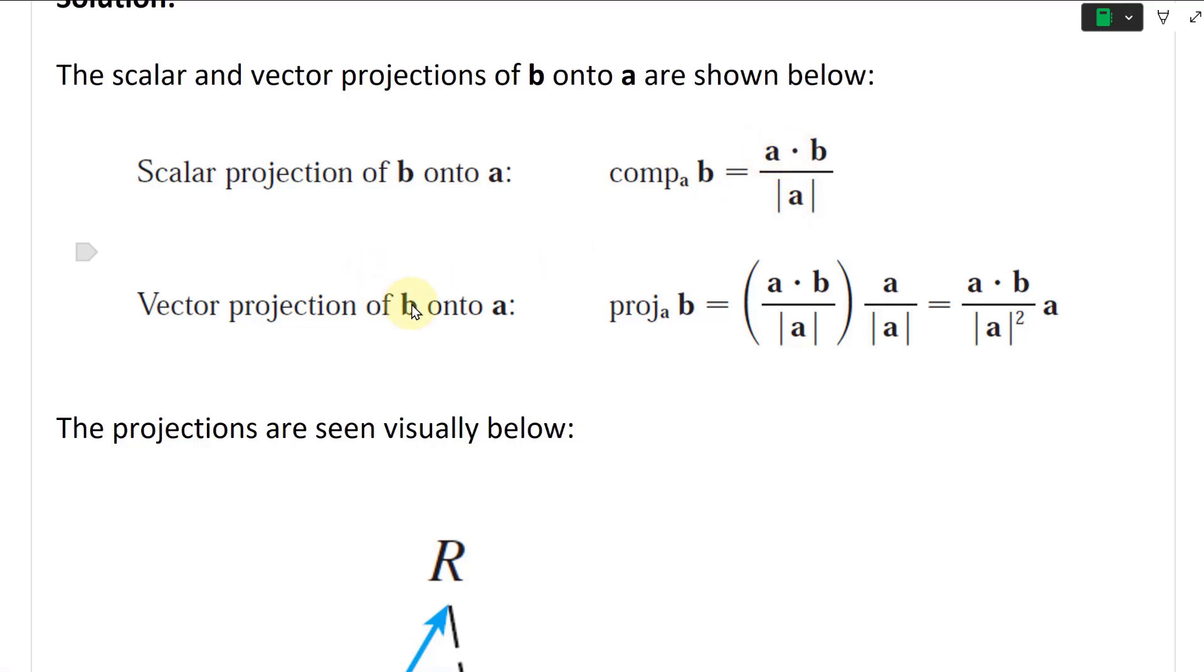The vector projection of B onto A is noted as proj_a B equals the component of B onto A—that's this part right here.